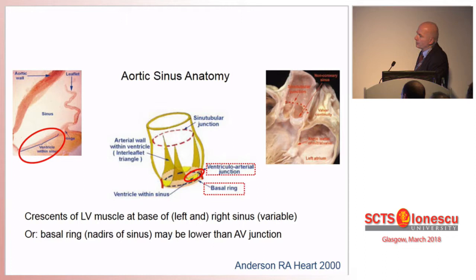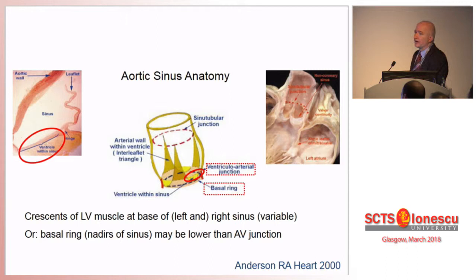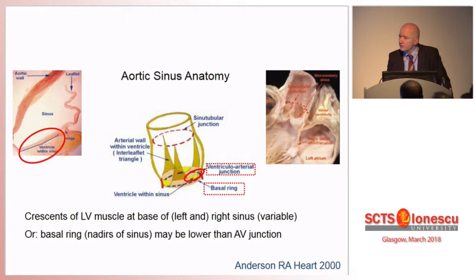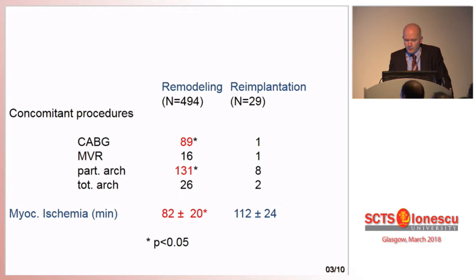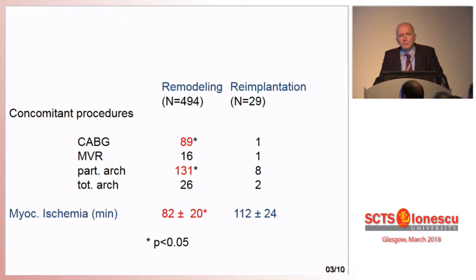Not always do we have an aorto-ventricular junction at the transition between cusp and aorta or ventricle. At times we actually have ventricle inside the sinus — an anatomic variation in which the aorto-ventricular junction is higher than the basal ring, as termed by Bob Anderson. This poses problems for re-implantation or any procedure that requires dissection all the way down to the basal ring, and this anatomic feature prompted me to look more into root remodeling.